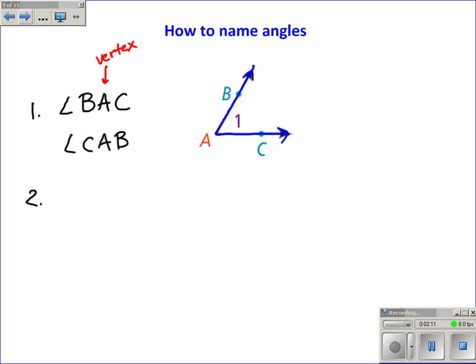The second way of naming angles is sometimes we only have one angle at a particular vertex. In this case, angle A is the only angle that has a vertex at A, so we can call it angle A. But be careful with this, because if there's more than one angle at a particular vertex, we can't use this way of naming. The third way is sometimes our angle is given a name by using a number. Like here, number 1 is the name of this angle, and so I can also call it angle 1.